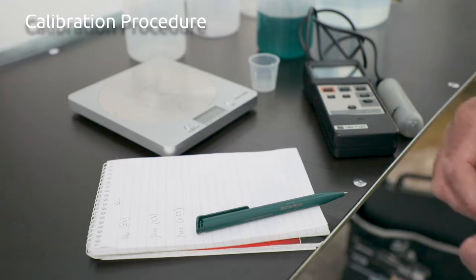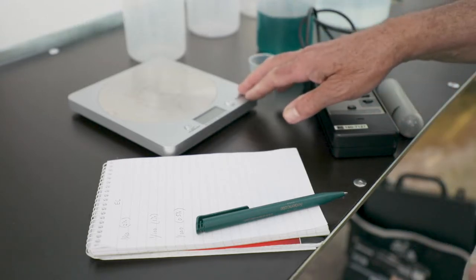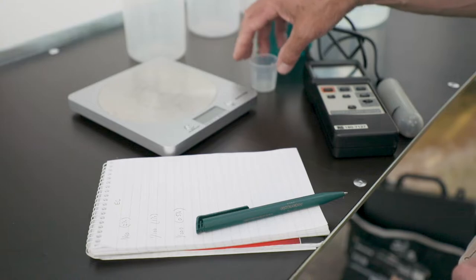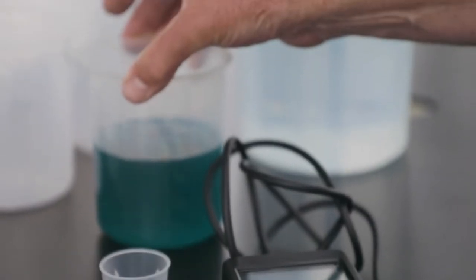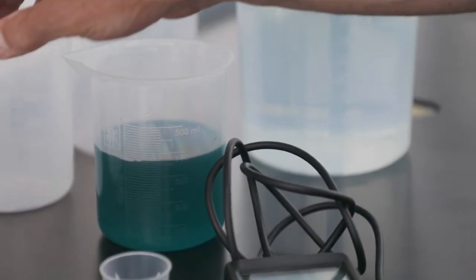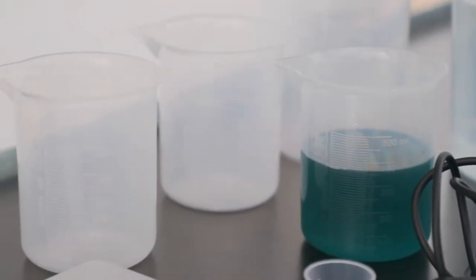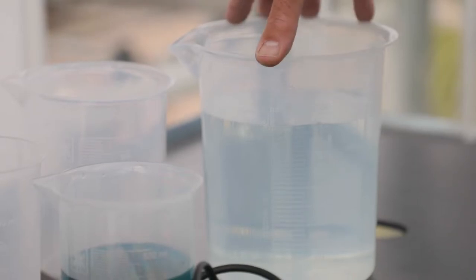All you need to do this on a nursery is a set of kitchen scales, a small measuring beaker, a conductivity meter, you need some beakers in order to have your stock solution and for your dilution and obviously you need water from the nursery which is your background for the dilution.